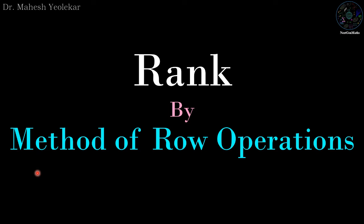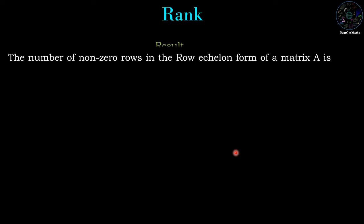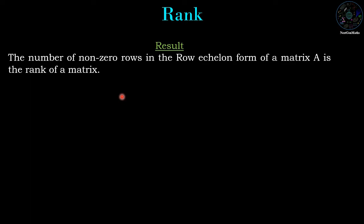In this video we are going to discuss rank by method of row operation. We recall the result: the number of nonzero rows in the row echelon form of a matrix is the rank of that matrix.